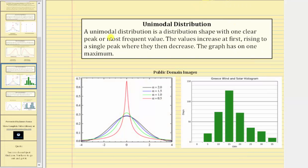A unimodal distribution is a distribution shaped with one clear peak or most frequent value. The values increase at first, rise to a single peak, where they then decrease. The graph has one maximum.